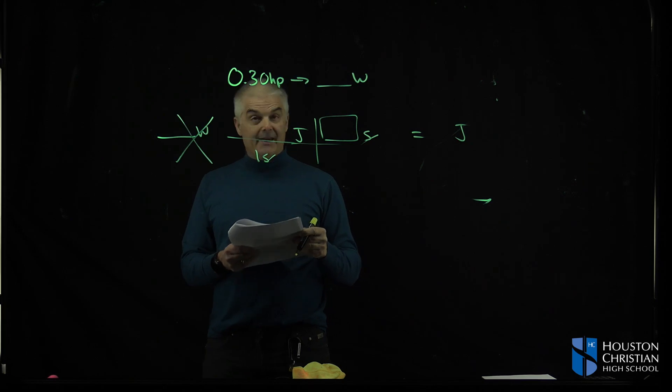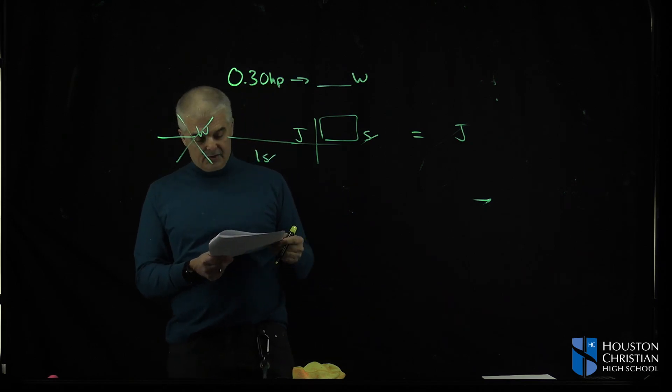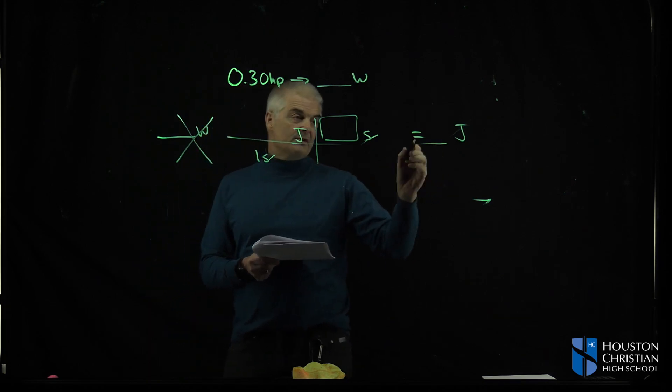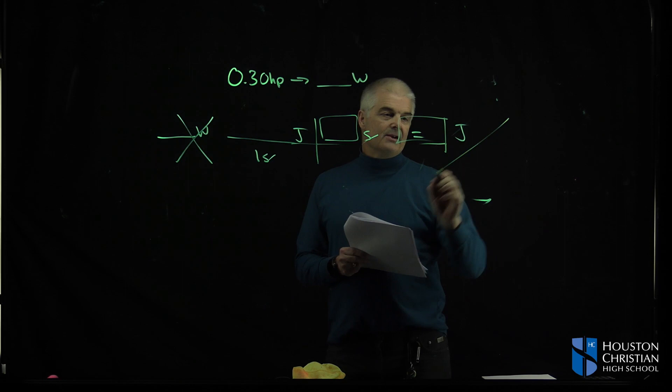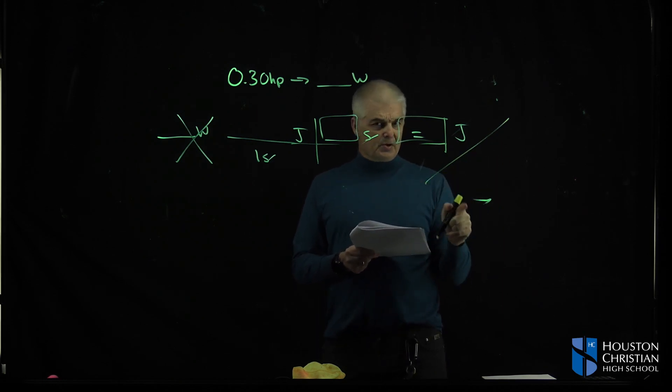And then the next question is how many candy bars, 280 calories per bar, would the pilot have to consume to fuel up for the flight? So once you know this number, what you're going to do is you're going to take this number and divide it by the number of joules per candy bar.